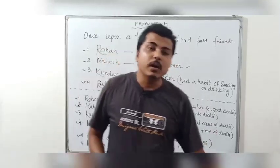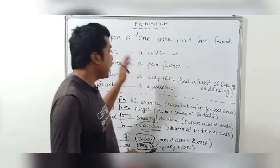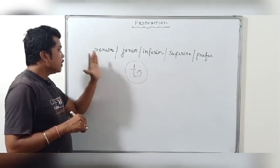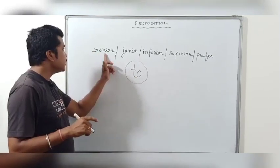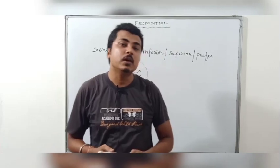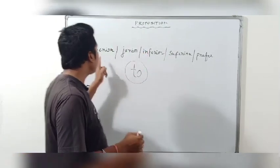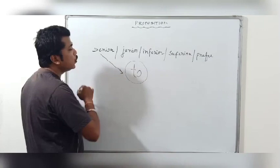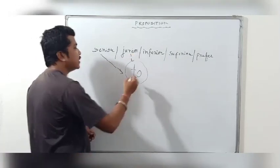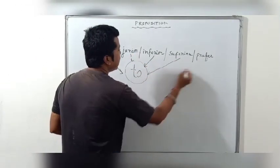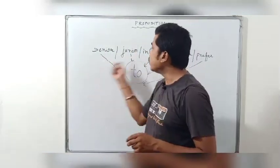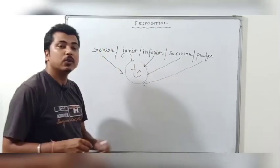So, dear student, to summarize: if someone sacrifices their life for good deeds or for their country, use 'for'. If death is a direct cause such as a named disease, use 'of'. For indirect cause, use 'from'. For situation at the time of death like an accident, use 'in'. For means of death like hanging or a gunshot, use 'by'. Additionally, words like senior, junior, inferior, superior, and prefer all take the preposition 'to' — for example: he is senior to me, I prefer tea to coffee.